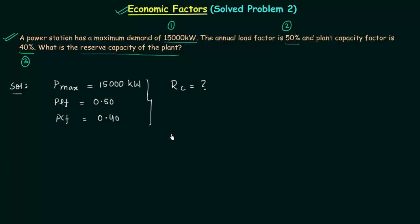If you remember the discussion on reserve capacity, you already know that reserve capacity is equal to plant capacity Pc minus the maximum power. We have the maximum power but we don't have the plant capacity, and we will calculate the plant capacity using these two pieces of information.